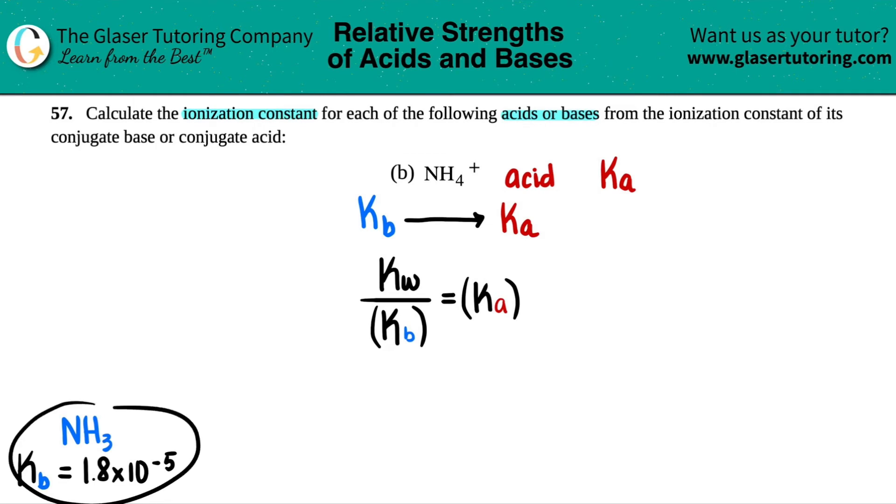Now Kb values or Ka values at the back of the book is at 25 degrees Celsius room temp. So that means that you should memorize the KW number. KW stands for water. The ionization constant for water is 1.0 times 10 to the negative 14th at room temp. And we know what this is now. 1.8 times 10 to the negative 5th. And that's going to equal our Ka.